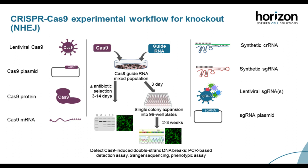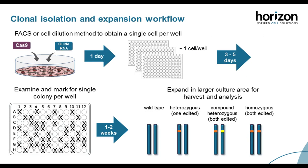Cells are transfected with Cas9 nuclease and guide RNA. Several techniques can then be performed, including clonal isolation or antibiotic selection, followed by detection and characterization by PCR-based mismatch detection, Sanger sequencing, Western blotting, or using a phenotypic assay.